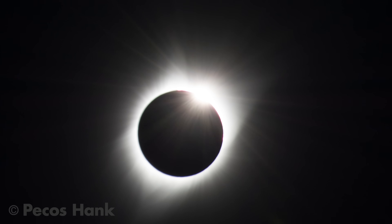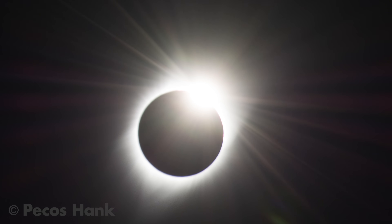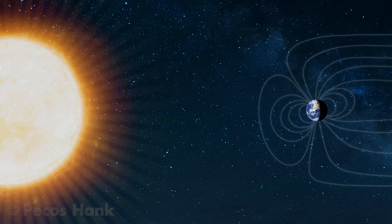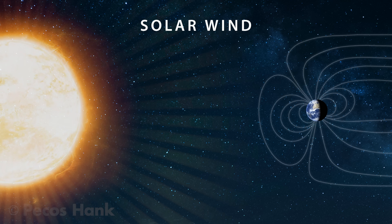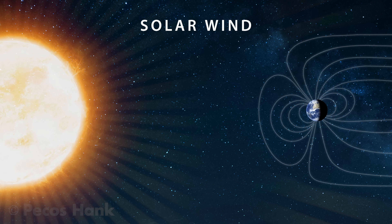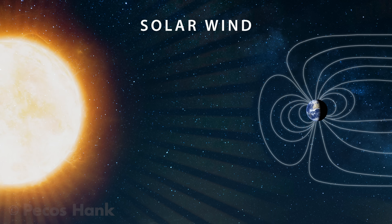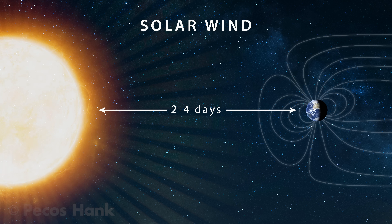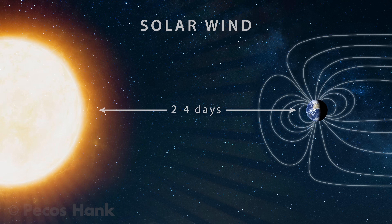Our sun ejects gases and charged particles into space in all directions — this is the solar wind. The harmful solar wind reaches the Earth's protective magnetosphere in about 2 to 4 days.